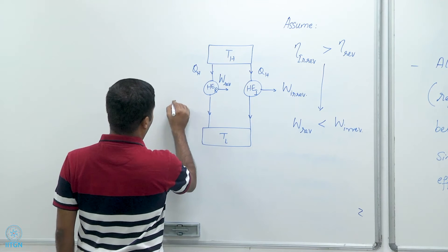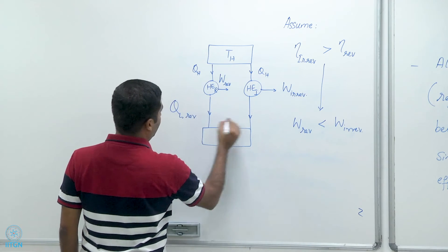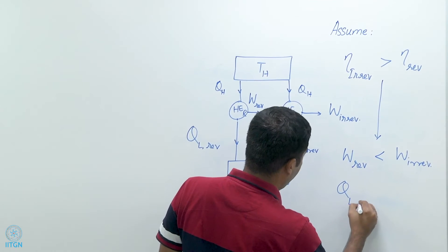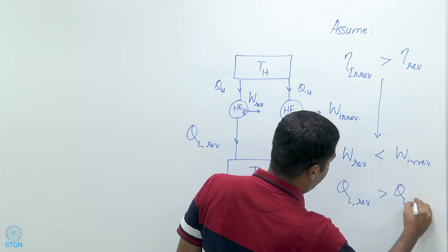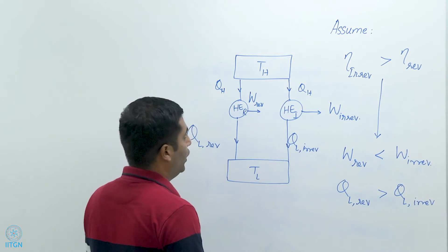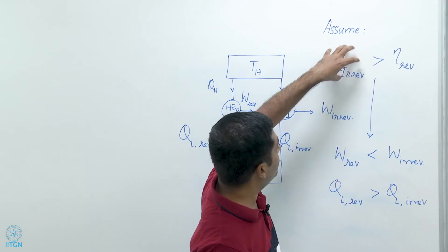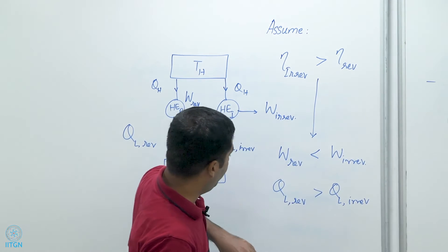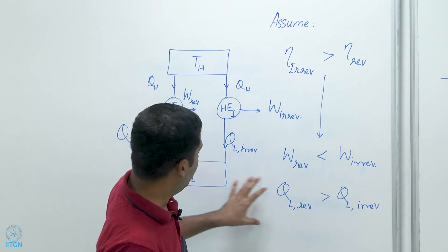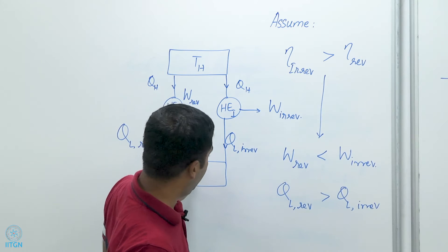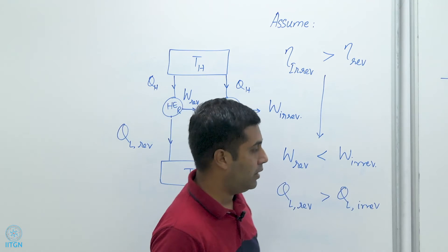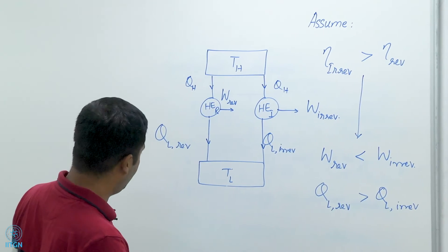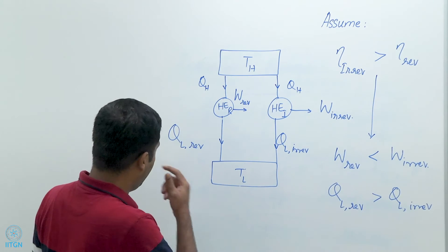We also have Q_L_reversible and Q_L_irreversible rejected to the lower temperature reservoir. Under our assumption, Q_L_reversible > Q_L_irreversible. So if the irreversible engine has greater efficiency than the reversible one, then the reversible work is less than the irreversible work, and the heat rejected by the reversible engine to the low temperature reservoir is greater than that rejected by the irreversible engine.